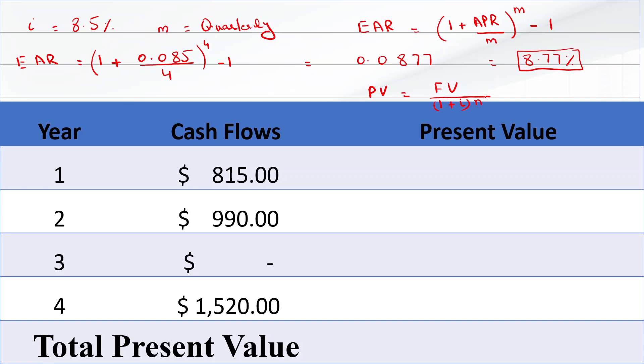The cash flows given in each year are the future values that we will receive after year 1, 2, 3, and 4, and we have to find the present values of these cash flows.